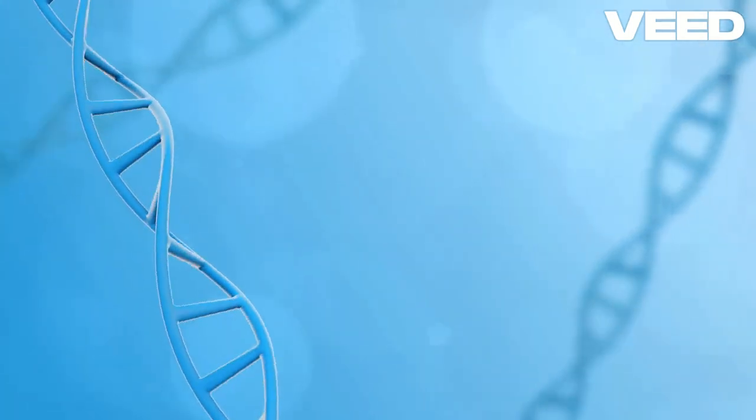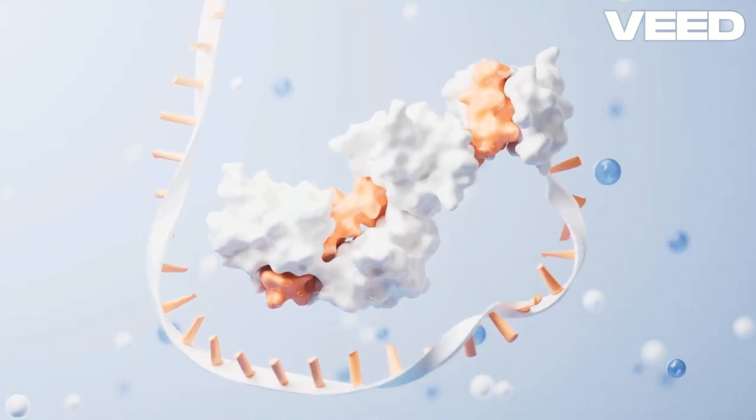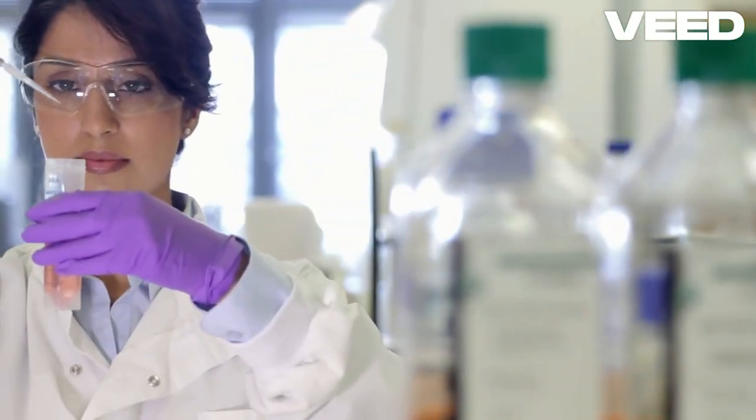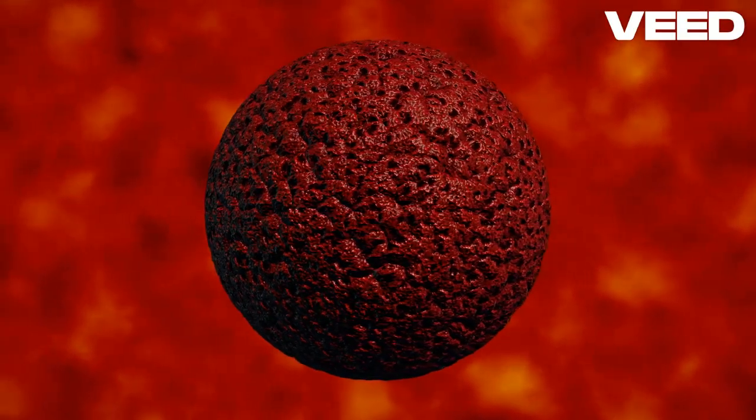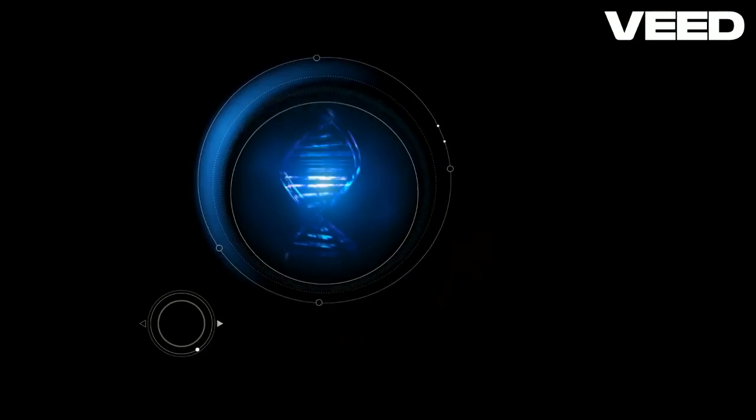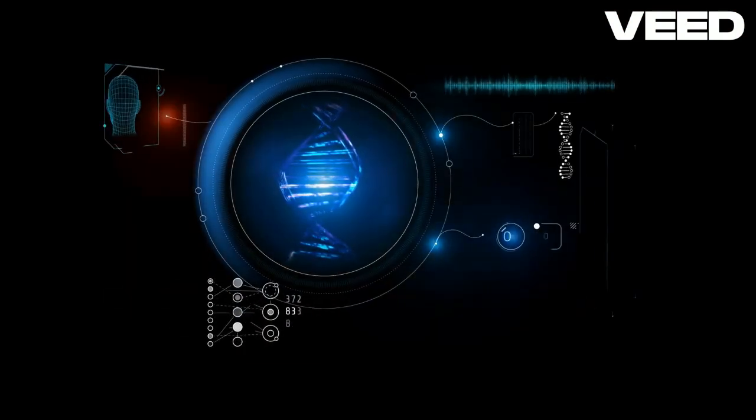Step 2. Elongation. Here's where the magic really happens. DNA polymerase enzymes start adding complementary nucleotides to each of the original DNA strands. One strand, known as the leading strand, is synthesized continuously, while the other, the lagging strand, is synthesized in short fragments called Okazaki fragments.